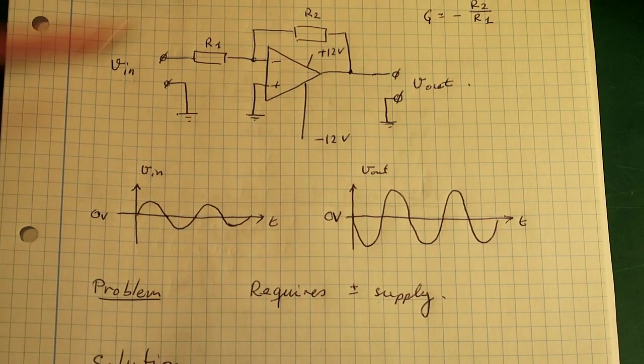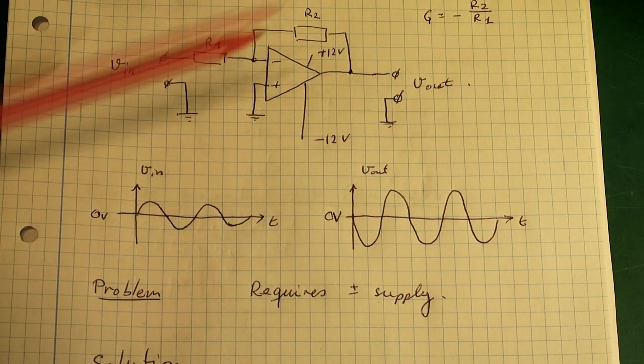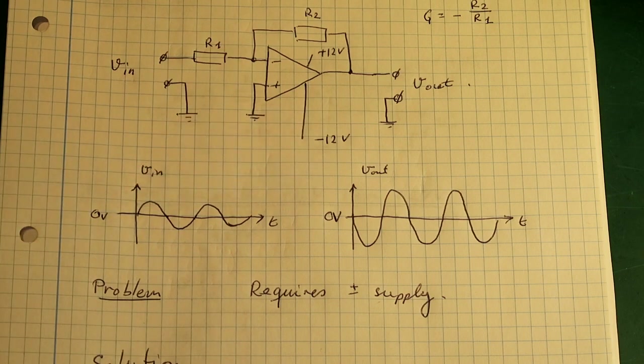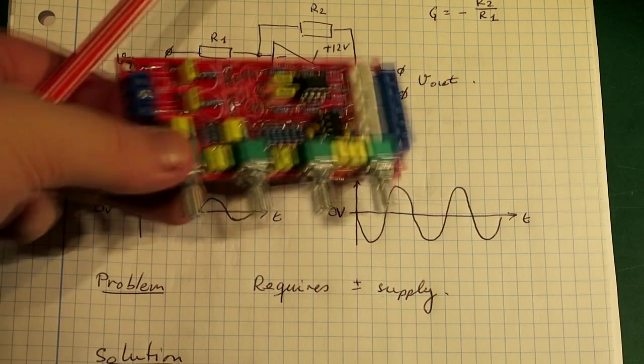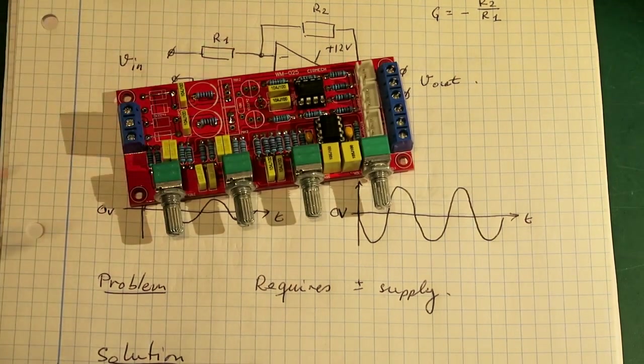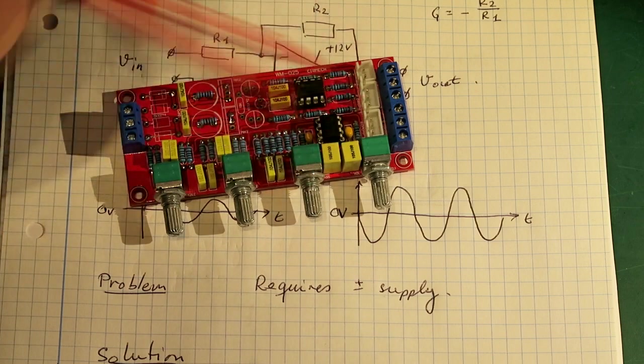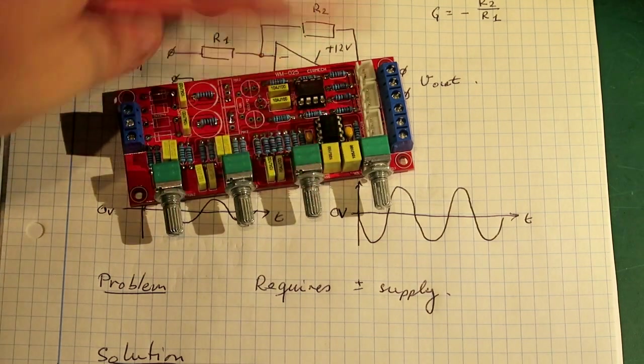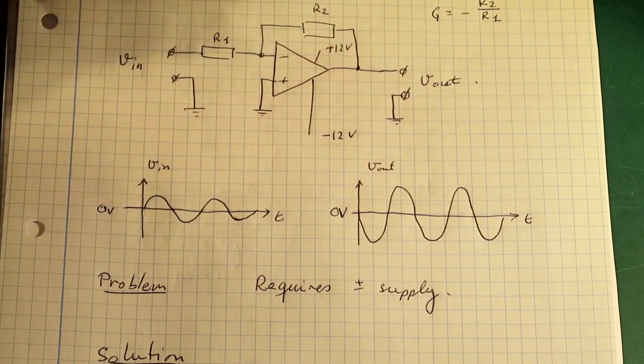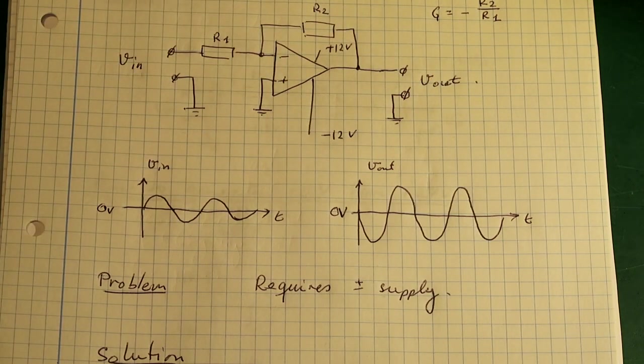The only problem we have with this circuit is that it requires a plus and minus 12 volt power supply. This is not normally available. On this circuit they built in the power supply and it was designed for a transformer with a center tap. So they have made this power supply circuit to generate plus and minus 12 volts. But as I said earlier I don't have that available.